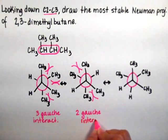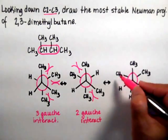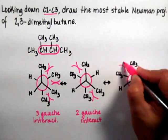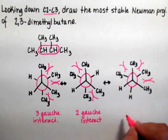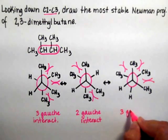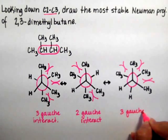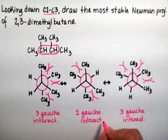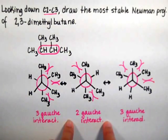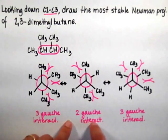The last one has four methyls in a row. So I have one, two, three gauche interactions. Which one is the more stable? If you answer the middle one, the one that has the least number of gauche interactions, then you're right.